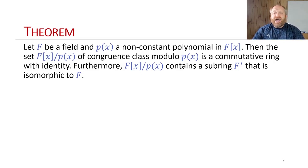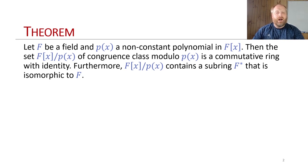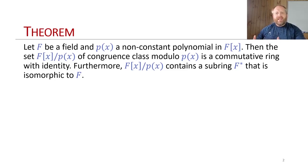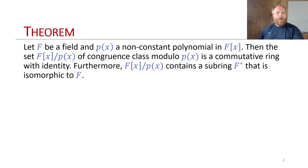For this theorem, let f be a field and p(x) be a non-constant polynomial in f adjoint x. Then the set f adjoint x mod p — the congruence classes modulo p — is a commutative ring with identity. Furthermore, f adjoint x mod p contains a subfield f* that is isomorphic to f. From last class, that subfield f* gave us congruence classes of 0 and 1 mod p, isomorphic to Z mod 2 but not exactly what we wanted. Let's begin by proving this theorem.